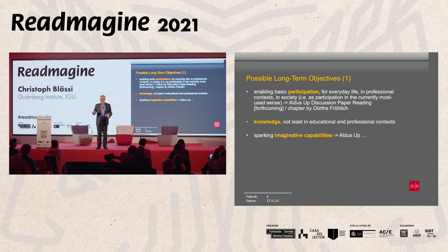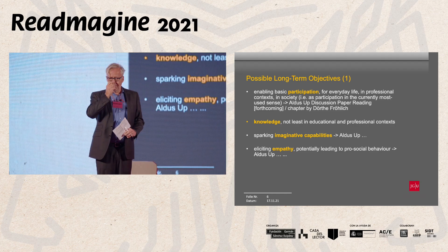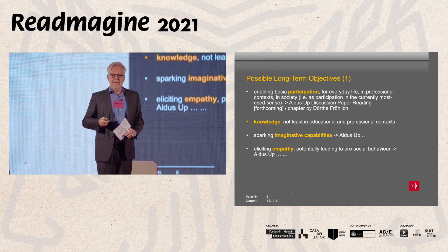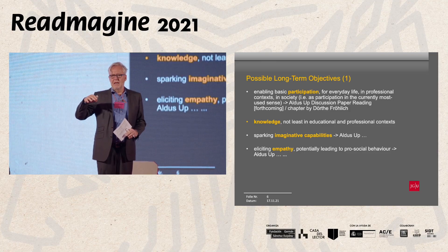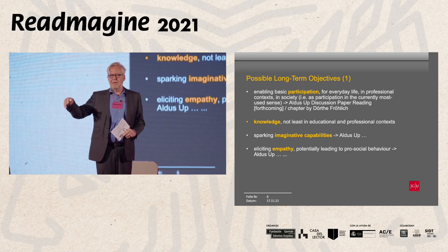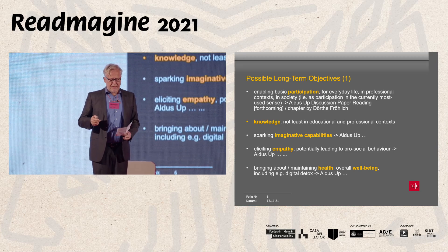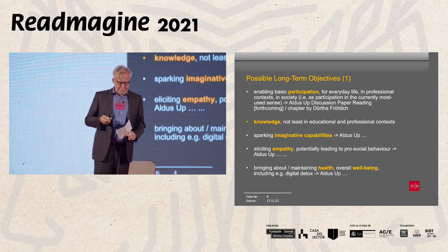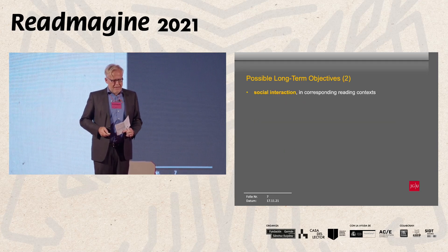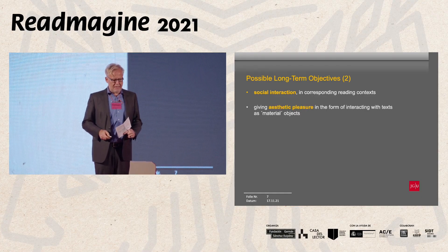Reading can spark imaginative capabilities — that's not the same thing as knowledge — and it can elicit empathy. This is probably the most well-known dimension because two researchers in the early 2010s did experiments suggesting that a person who reads ambitious literary fiction will be a more empathetic person afterwards, compared to a person not reading or reading less ambitious material. There is also a lot of literature saying that reading, in certain dimensions, brings about or maintains health and overall well-being. And reading can make possible social interaction — think of reading communities, online or in the real world.